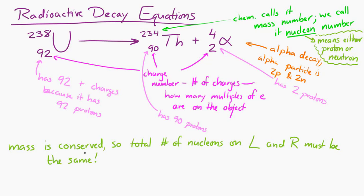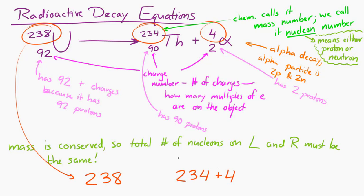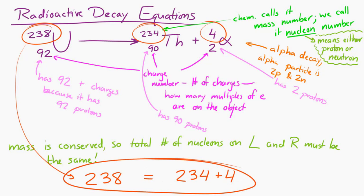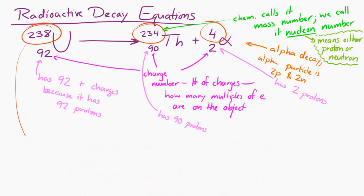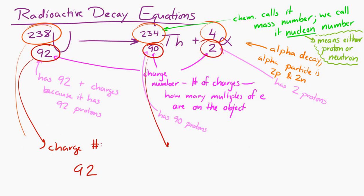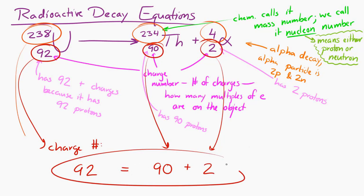Let's verify that. The total number of nucleons must be the same before and after. Before, we had 238 nucleons. After, we have 234 plus 4, which is 238. So the nucleon number is conserved. Looking at the charges: we have 92 positive charges on the left, and after the reaction we have 90 in the thorium plus 2 positive charges on the alpha particle, which gives 92 positive charges. So the charge number is also conserved.